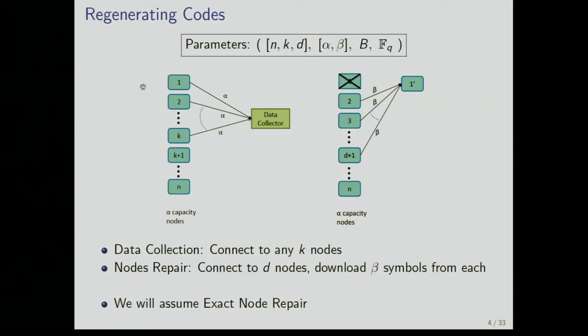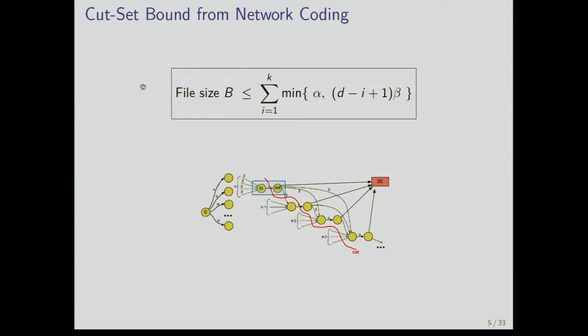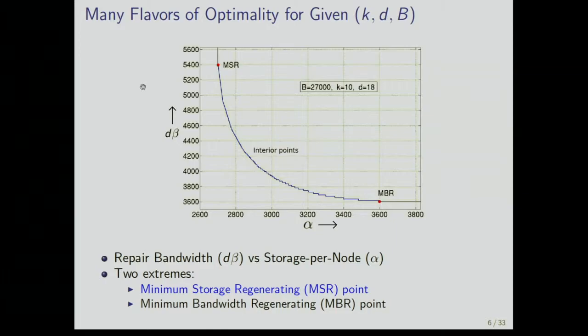We will assume throughout this talk that node repair is exact. That means that when a node fails, we're going to replace it with an exact replica. I shrunk this figure because I think the focus is not on the details, but just to say that there is a bound which comes from network coding, which tells you how large your file can be. This can be interpreted, this is a cut set bound so it can be interpreted in different ways. One way of saying that is that if you fix K, D and your file size, there are different parameters, alpha and beta, for which you can actually meet this inequality with equality. So, if you have a set of parameters for which equality holds, then you have an optimal code. And we will interpret it in the following way that you have, if for a given K, D and B, you have choices of alpha and beta for which you can make this bound hold with equality. So, in some sense, there are different flavors of optimality.